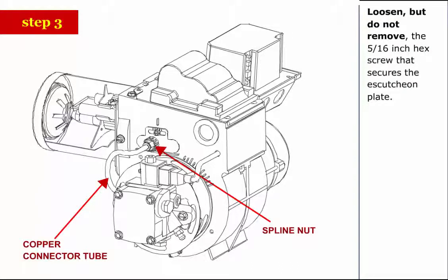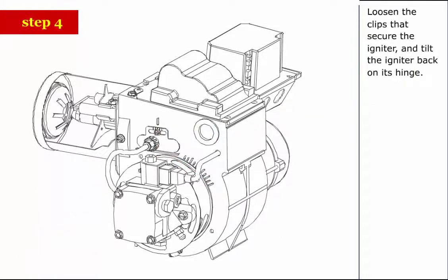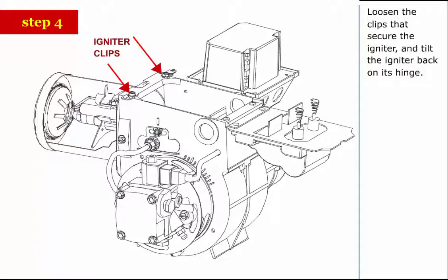Step 3: Loosen but do not remove the 5/16 inch hex screw that secures the escutcheon plate. Step 4: Loosen the clips that secure the igniter and tilt the igniter back on its hinge.